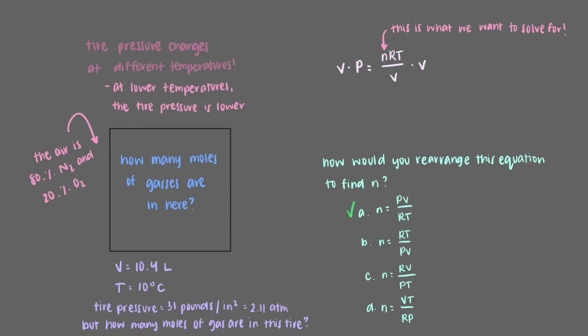That's right, we'll multiply both sides by V to get rid of the V in the denominator, and then divide both sides by R and T. That leaves the n variable alone on the right side of the equation.